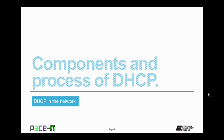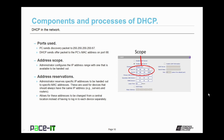Now let's talk about components and the process of DHCP, beginning with the ports used. The PC sends its discovery packet out on the broadcast address 255.255.255.255 on UDP port 67. When the DHCP server responds, it responds to the PC's MAC address — Media Access Control address — on UDP port 68. That's important to remember: the PC uses UDP port 67, and the DHCP server responds on UDP port 68.